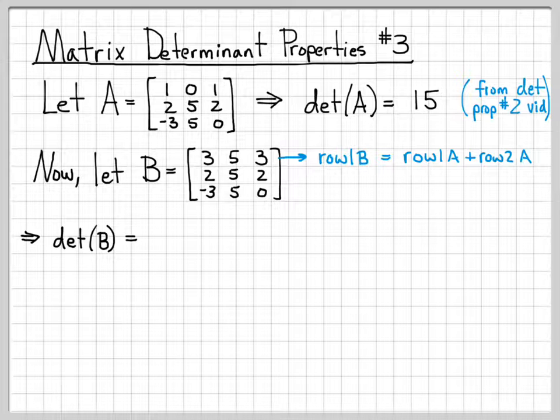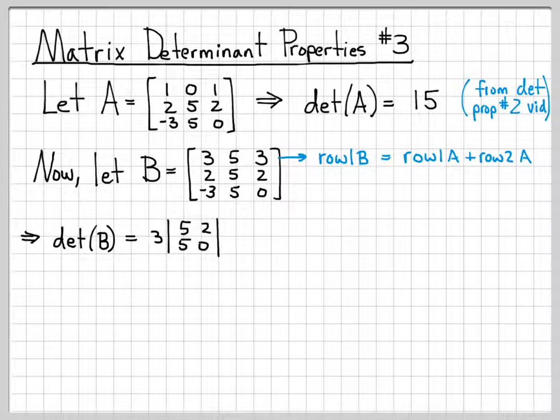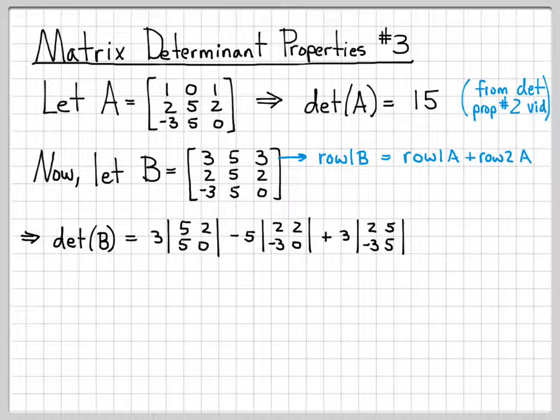So if we go through and compute the determinant of B, we know how to do our cofactor expansion. That's 3 times the determinant of this 2 by 2 matrix minus 5 times the determinant of this 2 by 2 matrix plus 3 times the determinant of this 2 by 2 matrix.